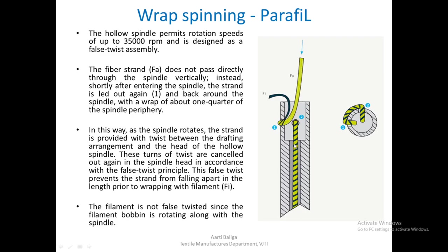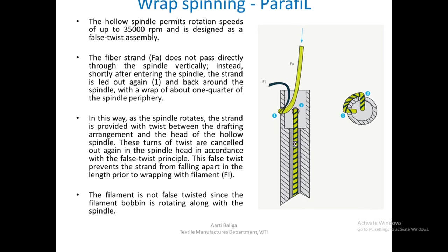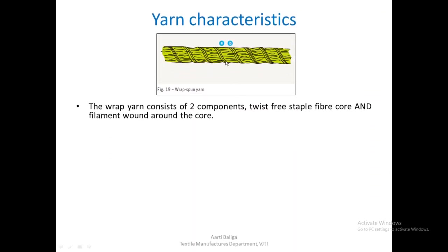What you get is a bundled yarn where the staple fibres are lying straight — set A — and the filaments, set B, are wrapping around the core. The wrap spun yarn consists of two components: twist-free staple fibres forming the core and the filament wound around the core.